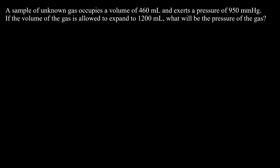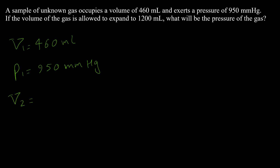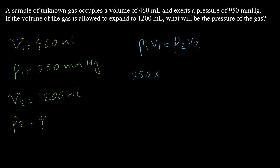Example 2: A sample of unknown gas occupies 460 milliliters — so the initial volume v1 is 460 mL — and exerts a pressure of 950 mmHg. If the volume expands to 1200 milliliters, what will the pressure be? So v2 = 1200 mL and we want to find p2. The formula is p1·v1 = p2·v2. p1 = 950 mmHg, v1 = 460 mL.